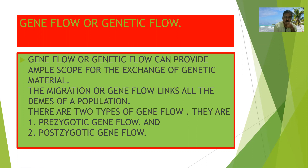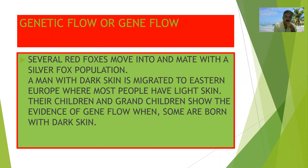Pre-zygotic gene flow means before the zygote formation there is a gene flow, and post-zygotic gene flow means after zygote formation there is a gene flow. For example, several red foxes moving to and mating with a silver fox population. Also, a man with dark skin migrating to Eastern Europe where most people have light skin — their children and grandchildren show some evidence of gene flow when some are born with dark skin.